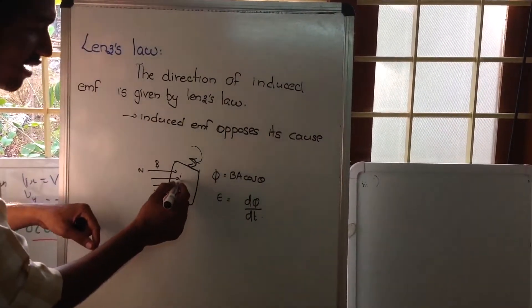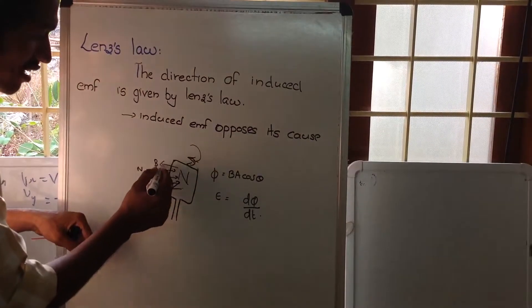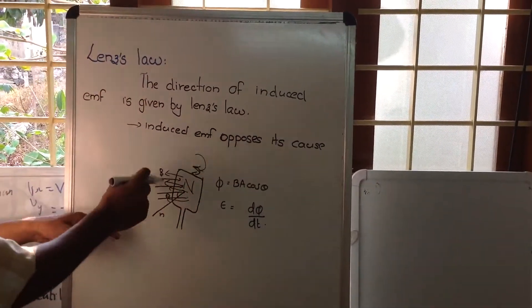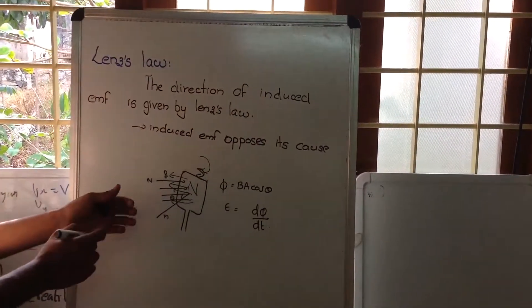That means it should act as a north pole such that it can create magnetic field opposing the given magnetic field.